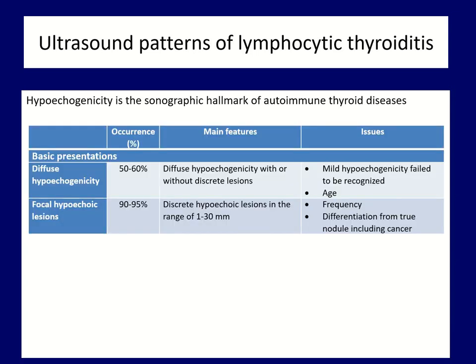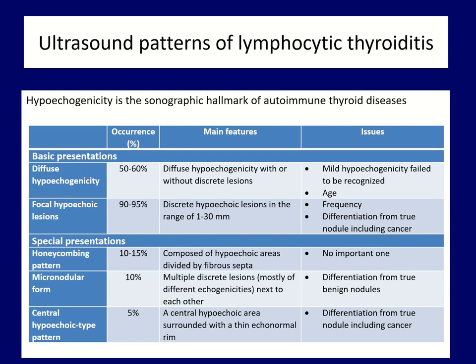There are two basic forms of lymphocytic thyroiditis. Diffuse hypogenicity is observed in half to two thirds of cases. The more pathognomonic presentation is the focal form, which can be found in more than 90% of cases. It is worth mentioning three special forms: the so-called honeycombing pattern, the micronodular form, and a less frequently mentioned echonormal rim subtype characterized by a central large hypogenic field surrounded by an echonormal rim.